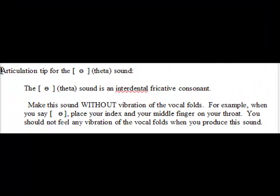Articulation tip for the theta sound. The theta is an interdental fricative consonant. Make this sound without vibration of the vocal folds. For example, when you say 'th,' place your index and your middle finger on your throat — you should not feel any vibration in the vocal folds when you produce this sound.